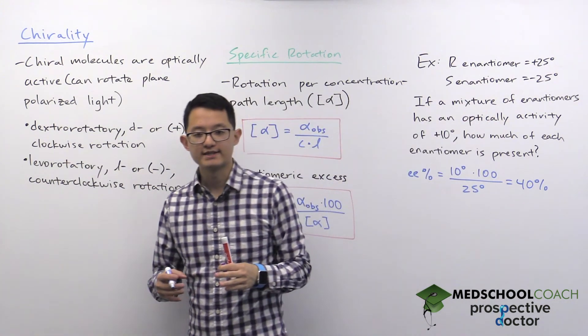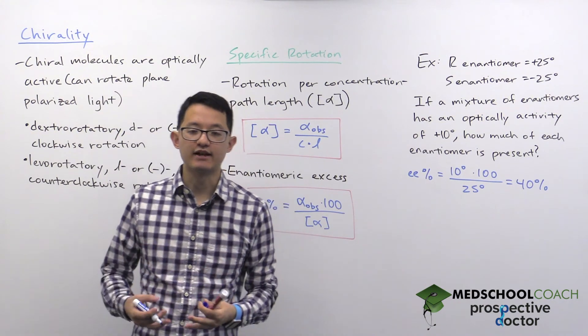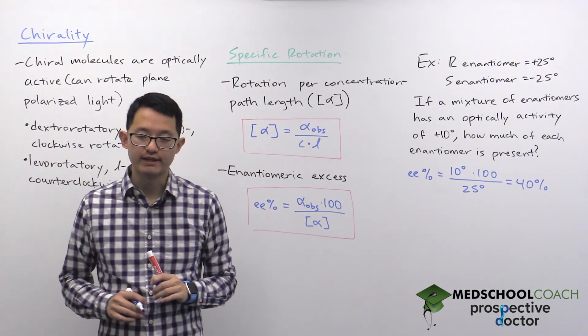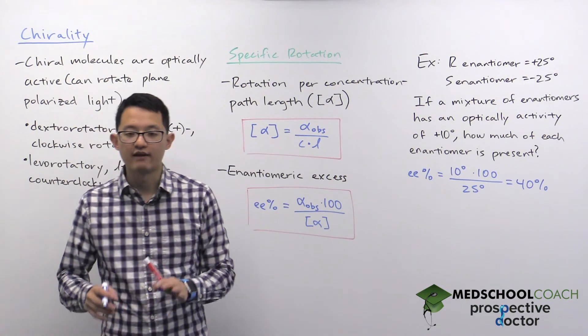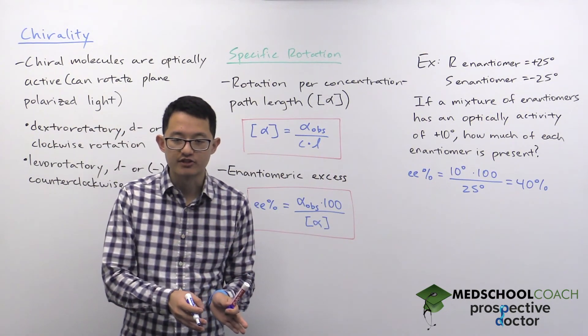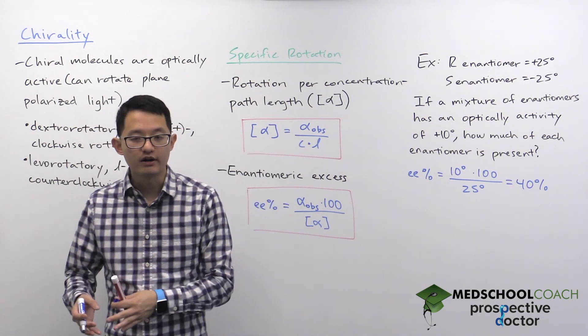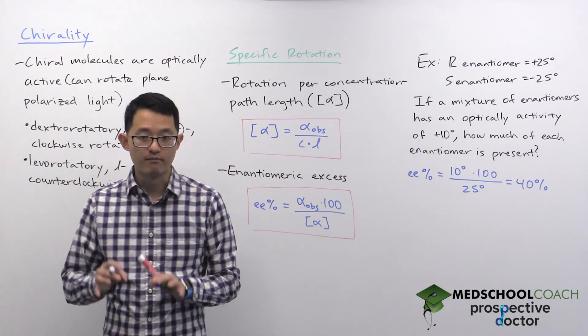That means we have an excess of 40 percent of the R enantiomer. It also means that the remaining 60 percent of molecules in solution is equal between the two. So that means you have 30 percent of the S enantiomer and 30 percent of the R enantiomer in equal amounts.